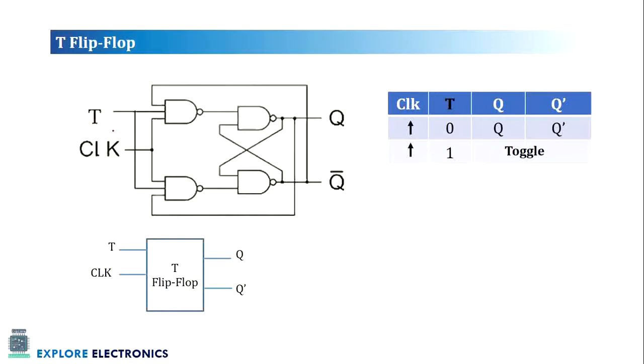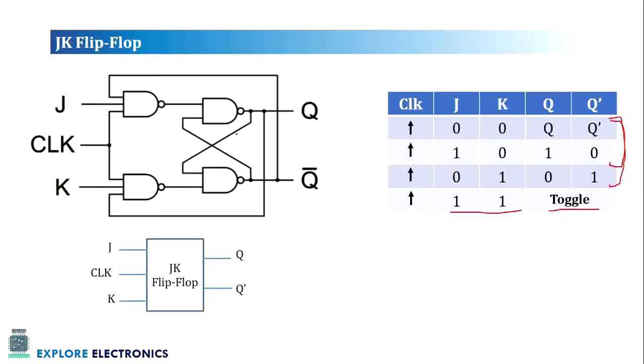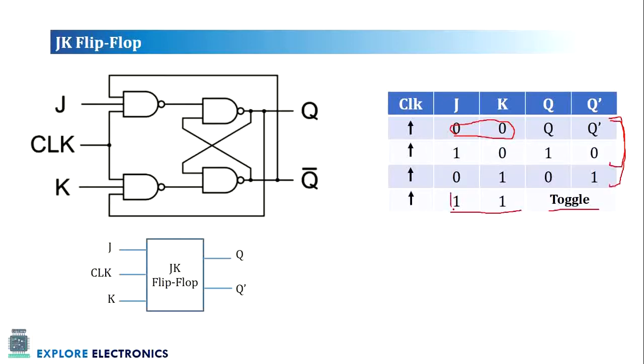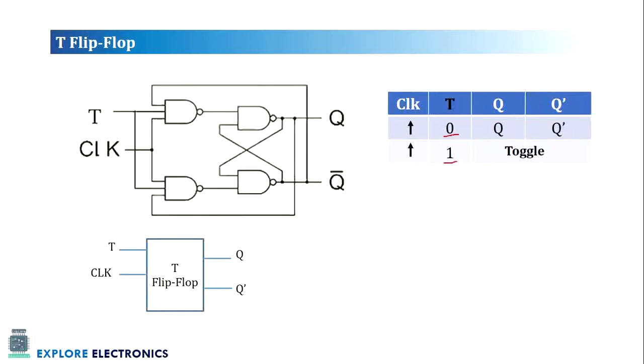So in T flip-flop, we can relate the working of this with respect to JK flip-flop. Since the inputs are directly connected, if the 0, 0 input of JK flip-flop can be related to T 0. As we say, the output will be held. And when T is equal to 1, it will be related to 1, 1 in JK flip-flop. It is giving the output toggle state. Similarly, here also, we are going to get a toggle state.